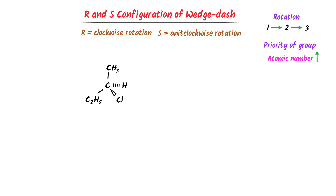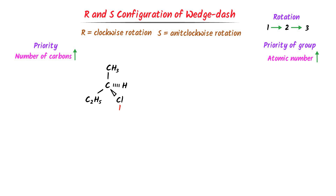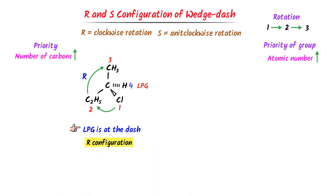Now consider this organic compound. We know that priority is given to a group having the highest atomic number. Chlorine has the largest atomic number, so first priority is given to chlorine. Now at the second and third positions, there are carbons. In such cases, we give priority to the one which has a higher carbon number. Second priority is given to ethyl, and third priority is given to methyl. Now I go from first to second, then second to third — this is clockwise rotation, so it has R configuration. Also, LPG is present at the dash position, so the final configuration is R.